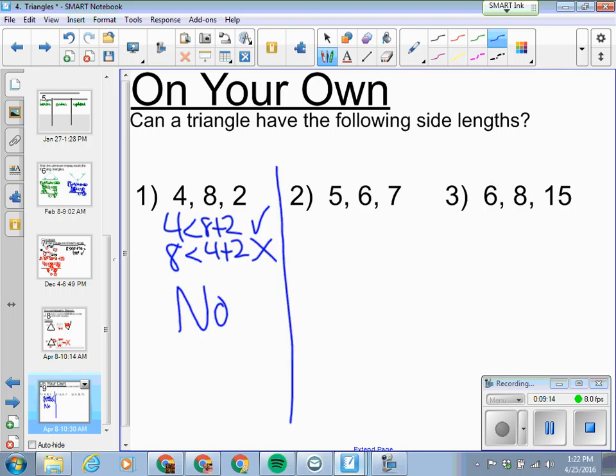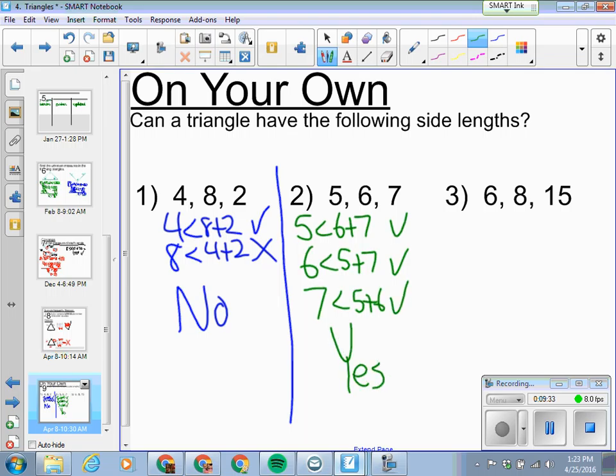And we'll test it out right here. So can a triangle have these measures? Well, the first one, let's see. Is 4 less than 8 plus 2? Definitely, because 8 plus 2 is 10. Is 8 less than 4 plus 2? Well, is 8 less than 6? It is not. We're going to stop right here. Number 1 is not a triangle.